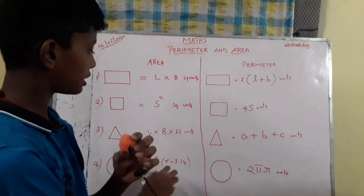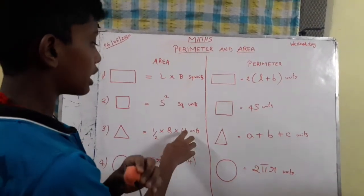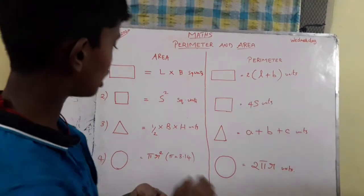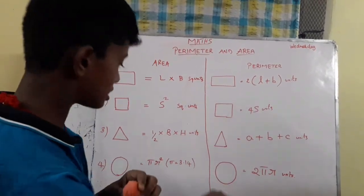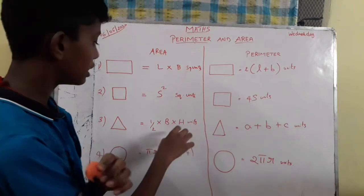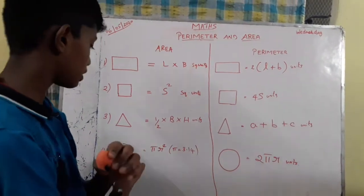B is base, H is height. If you say height, it is altitude. This is base, B is base, H is height, half is 0.5.